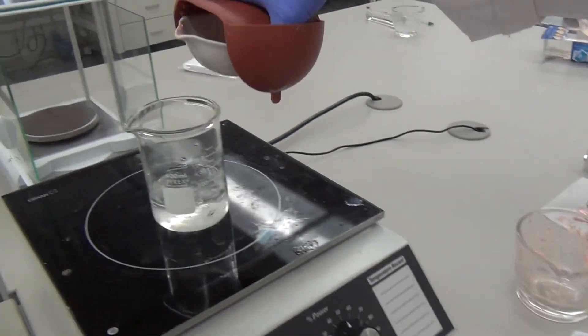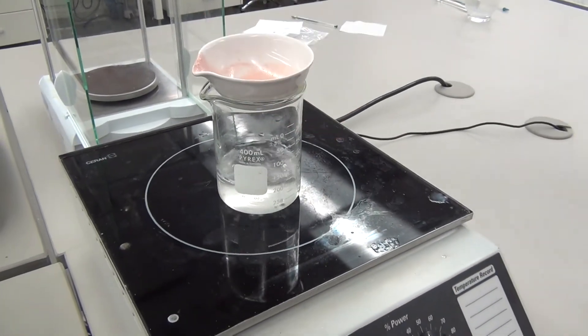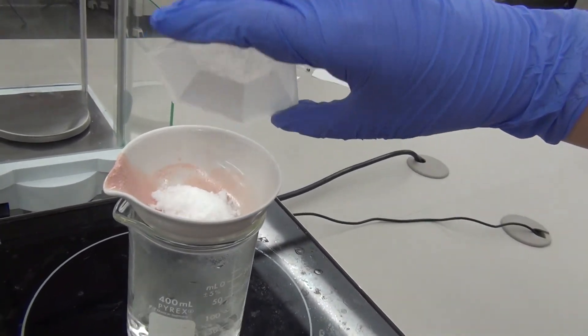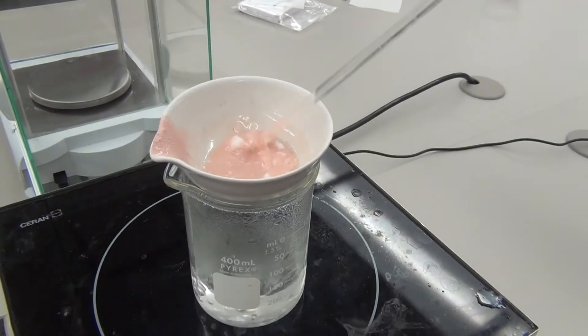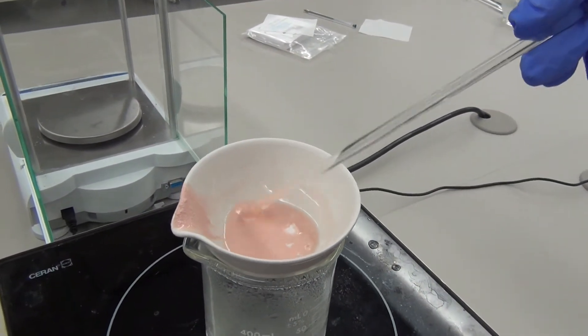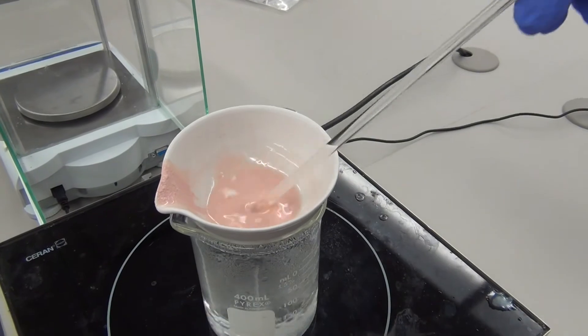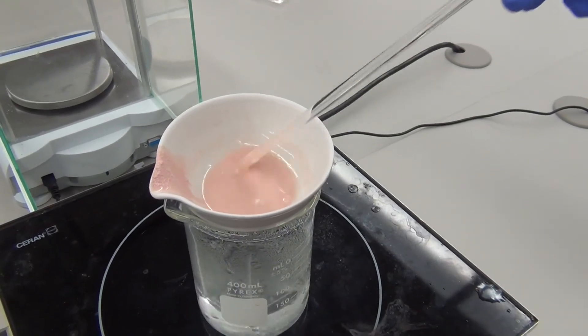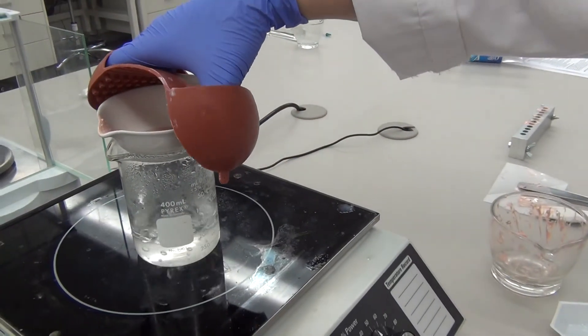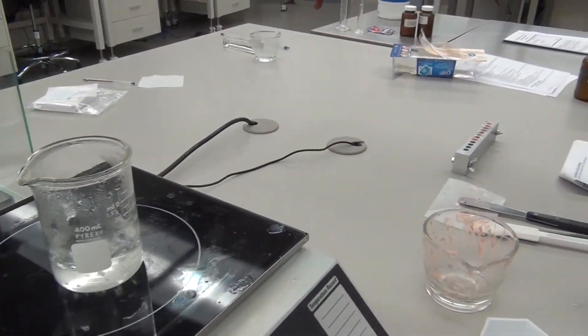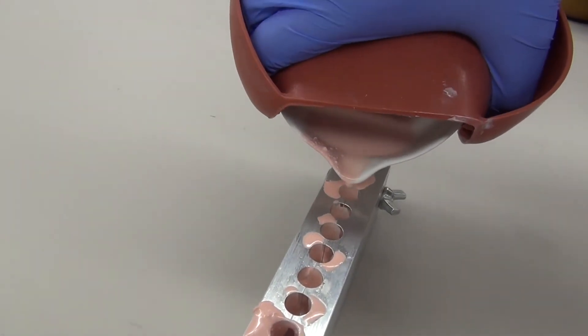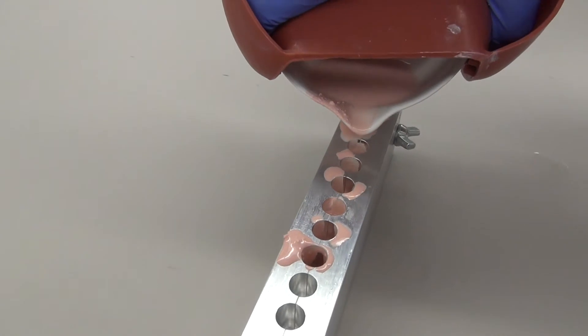Place the evaporating dish back over the water bath and add the second aliquot of the fatty blend. This should be the 8g aliquot. Mix any of the remaining drug with the fatty blend while you melt the two together. Once mixed thoroughly, go ahead and remove the evaporating dish. Pour the mixture into each of the cavities. You can now overpour into each cavity.